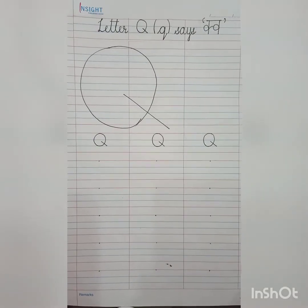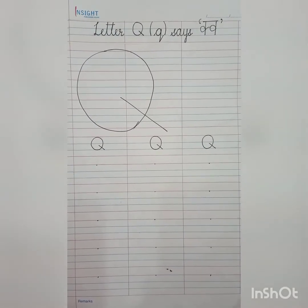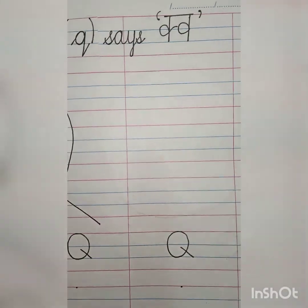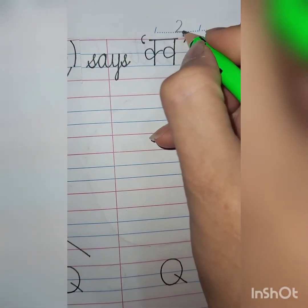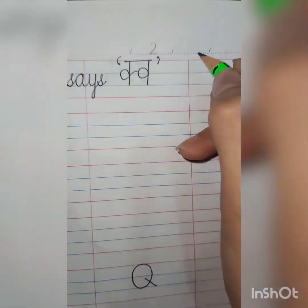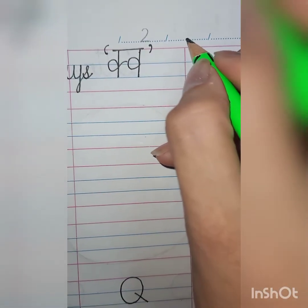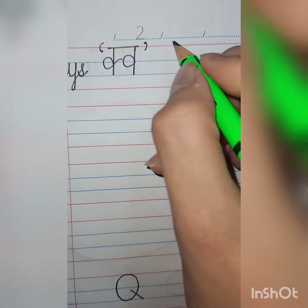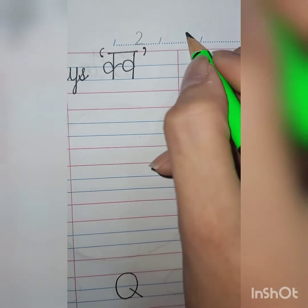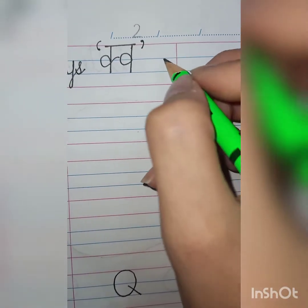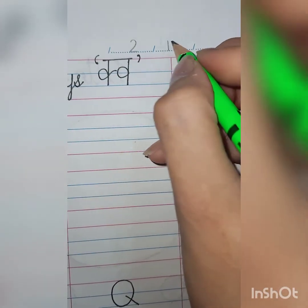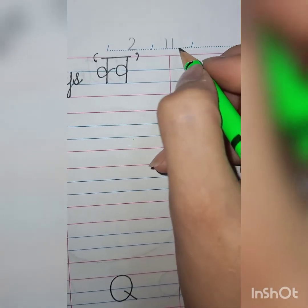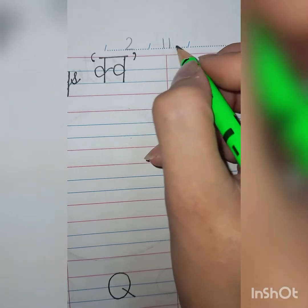So now, children, it's time to write letter Q in our notebook. But before writing, let us write the date. Today is the second — means two — November. Now a new month has started. Last month was October, and that was ten. Next month, November, means eleven.